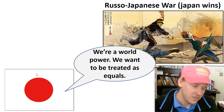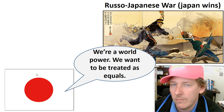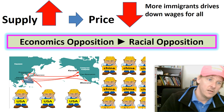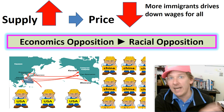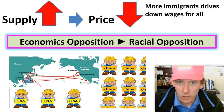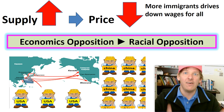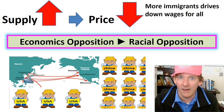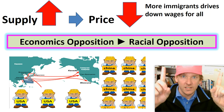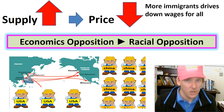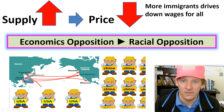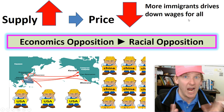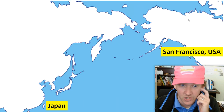Japan wins the war with the Russians and starts thinking they're a world power, but America isn't hearing it. The same economic principle applied to the Chinese also applies to Japanese immigrants moving to the country and driving wages down. The same thing applies today with Latin Americans moving into the country — a high supply of specific workers drives wages down for that specific task. Obviously Latin American immigrants aren't doctors, so they aren't increasing the supply of doctors. But construction workers are affected. Economic opposition often leads to racial opposition. Supply up, price down — more immigrants drives wages down.